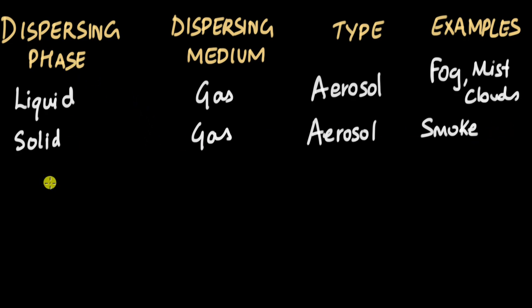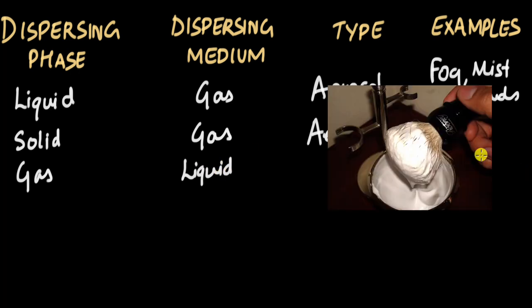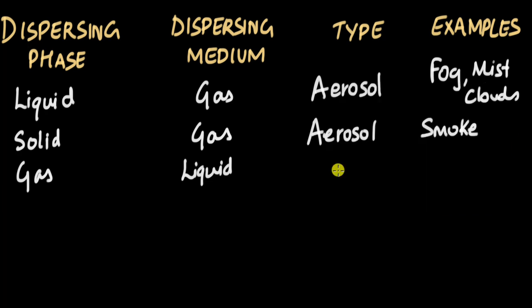Now let's take the dispersed phase as gas, so you have gas-like solute particles, and the dispersing medium is liquid. In this case, what you get is something like shaving cream. This type of colloid is called foam. An example is shaving cream.